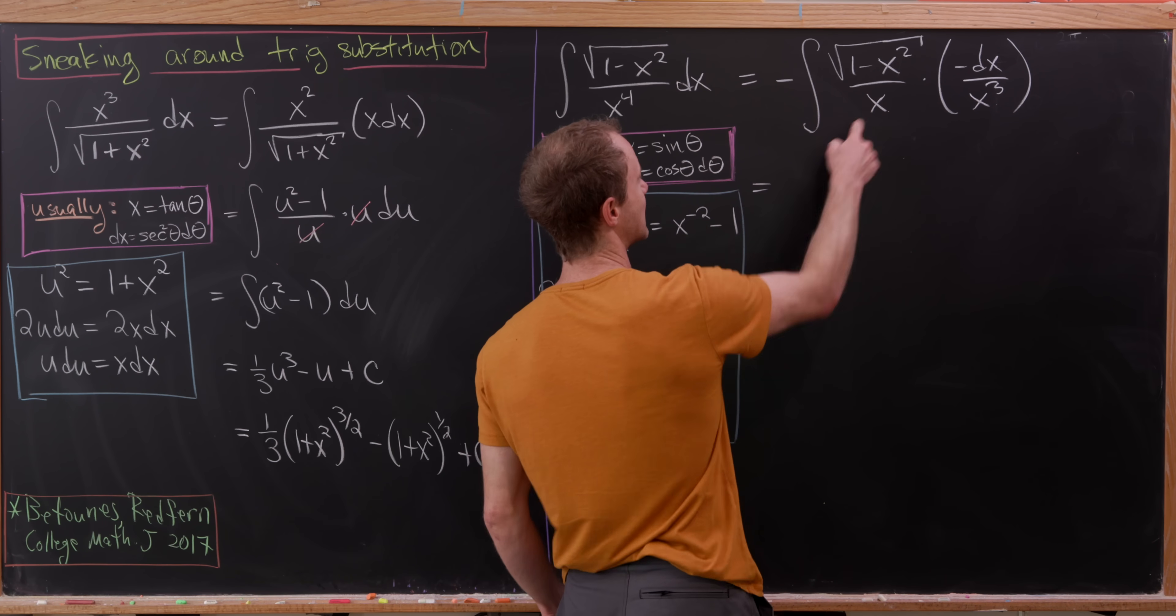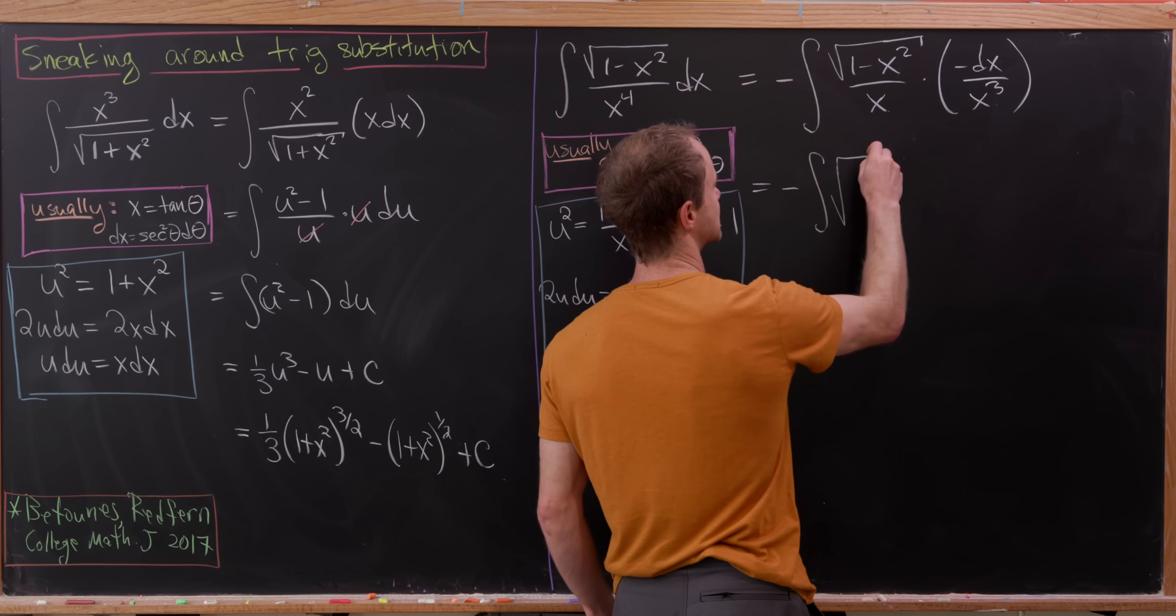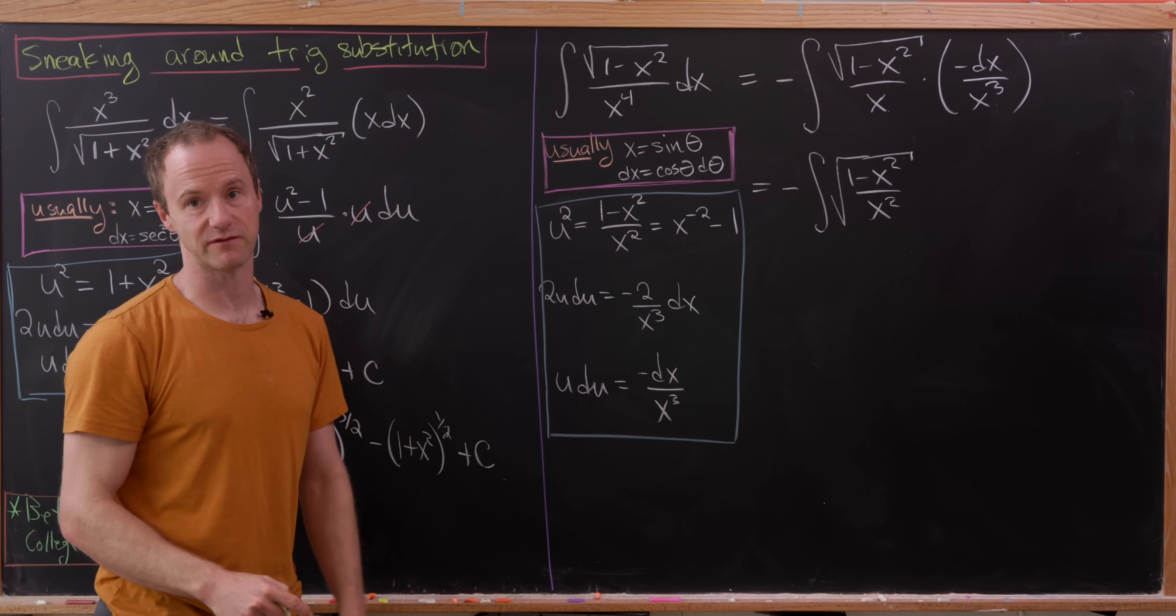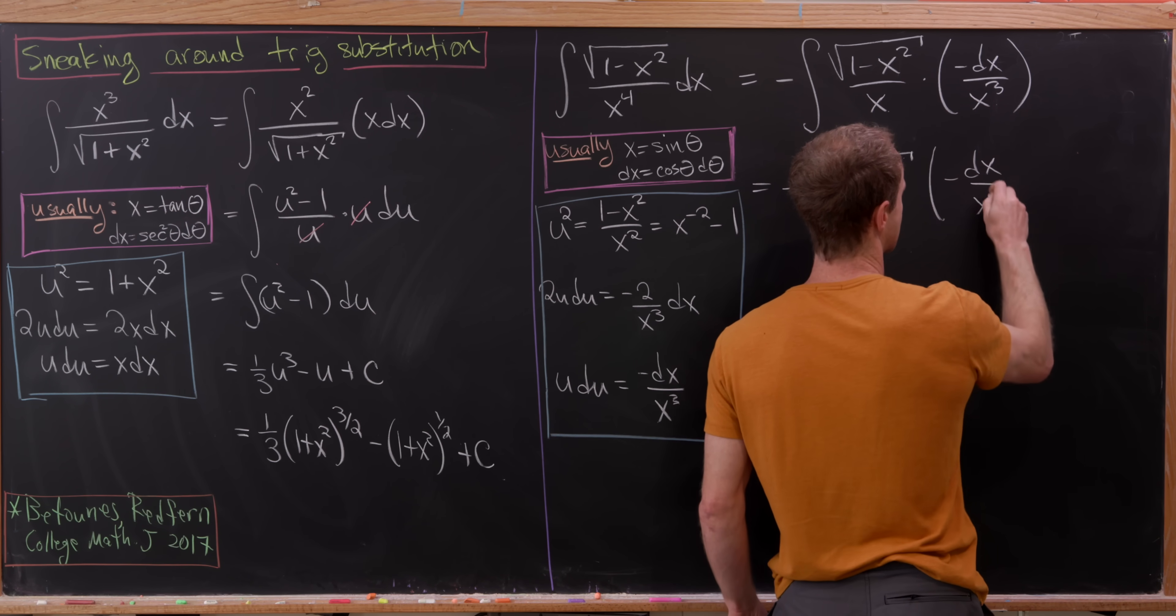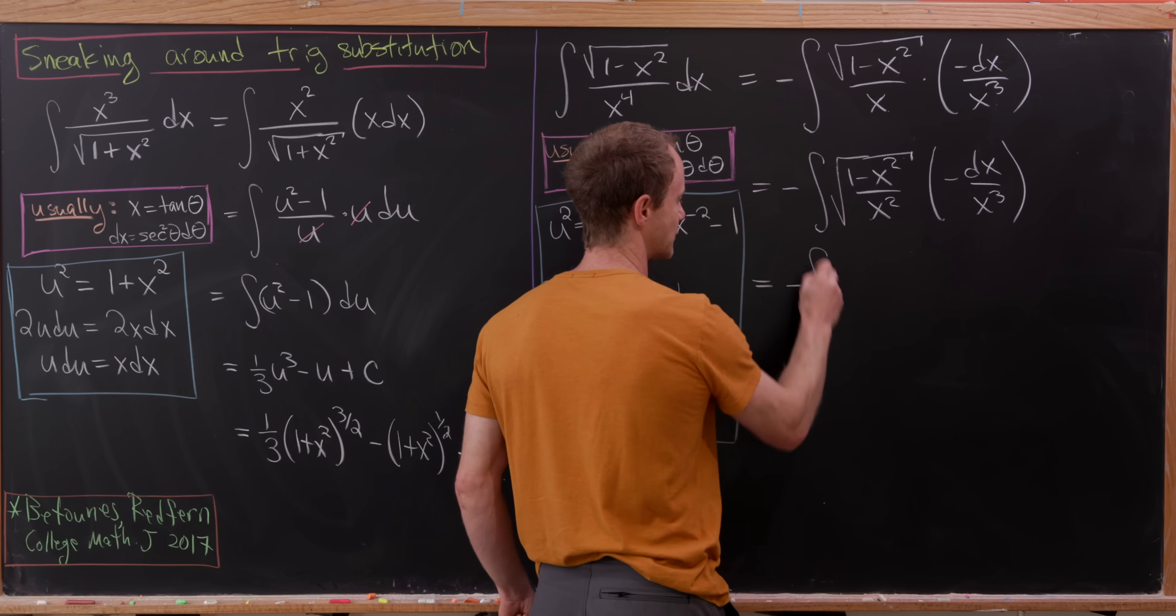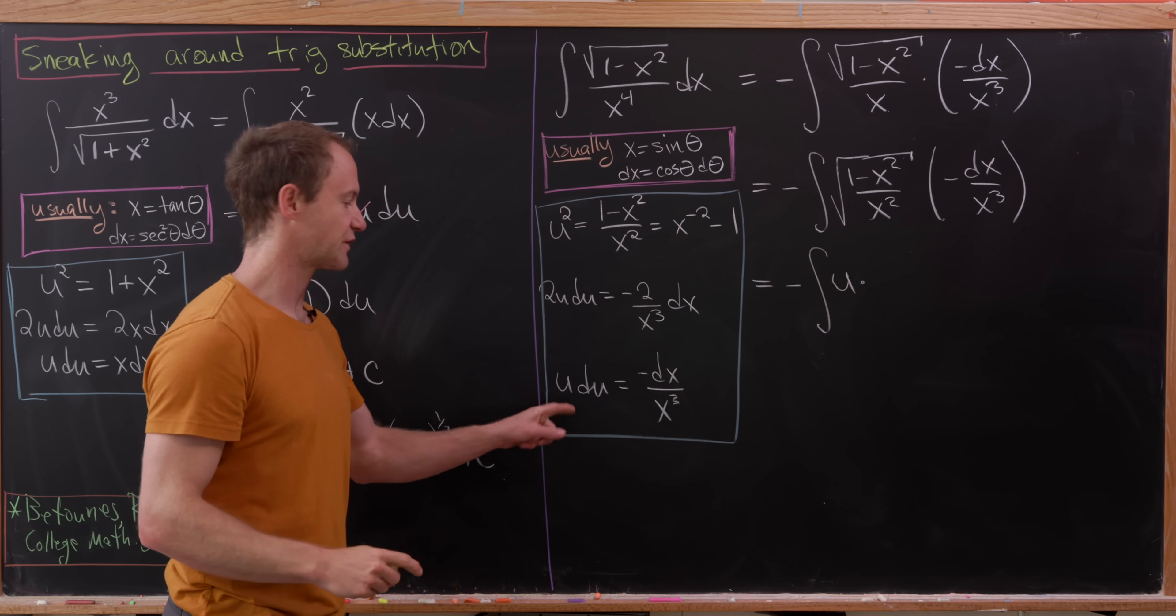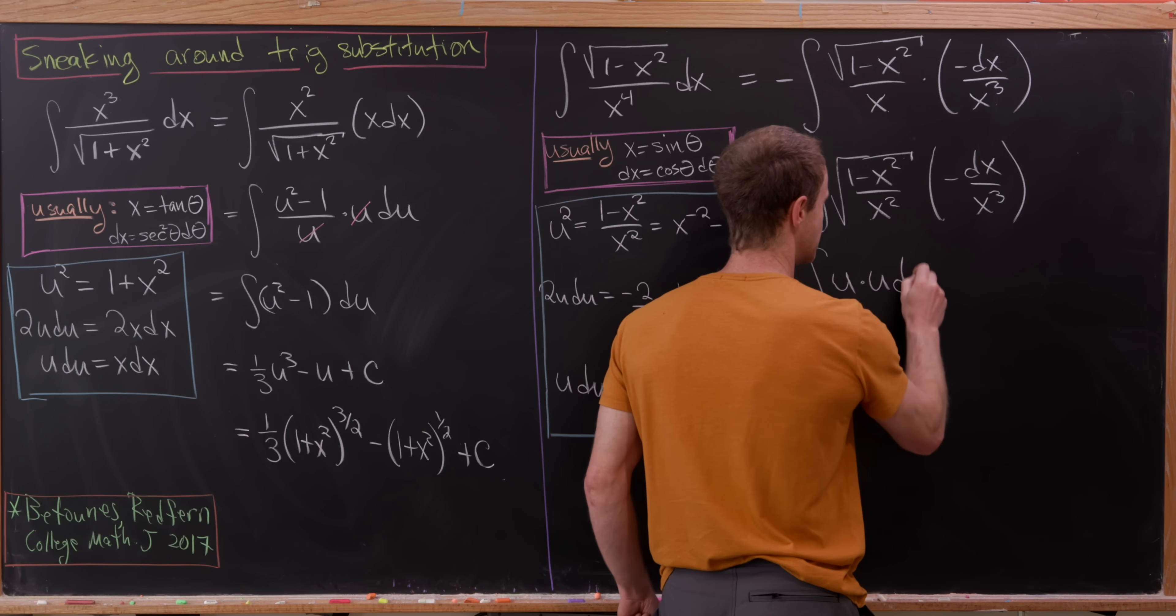But bringing that x cubed inside gave us just an x left over in the denominator, given that we started with an x to the fourth. But now we can bring this x in the denominator into the radical. That'll give us the square root of 1 minus x squared over x squared. And then you see our substituting variable here. And then, again, we've got minus dx over x cubed. But now we can finish our substitution. We'll have minus, this will be u, times, well, minus dx over x cubed is simply another copy of u. So it's going to be u du.